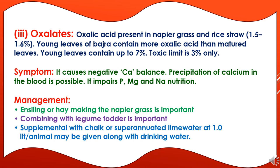Young leaves of bajra contain up to 7% oxalic acid, and the toxic limit is 3%. Oxalates cause a negative calcium balance; precipitation of calcium in the blood is possible, and it impairs phosphorus, manganese, and sodium nutrition. Management practices include silage or hay making with Napier grass, combining with legume fodder, and supplementing with chalk or slaked lime water at one liter per animal along with drinking water.